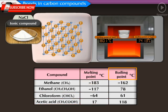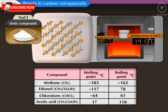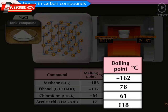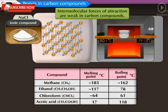The melting point of ethanol is −117°C and its boiling point is 78°C. Chloroform has a melting point of −64°C and boiling point of 61°C, while acetic acid has a melting point of 17°C and boiling point of 118°C. From these values, we understand that ionic compounds have much higher melting and boiling points compared to carbon compounds. Generally, boiling points of carbon compounds are lower than 300°C, showing that intermolecular forces of attraction are weak in carbon compounds.